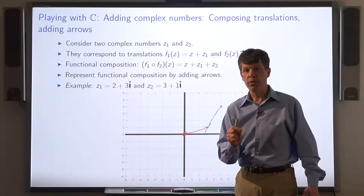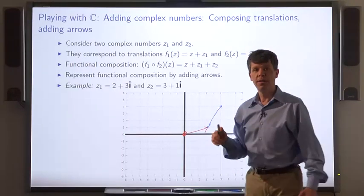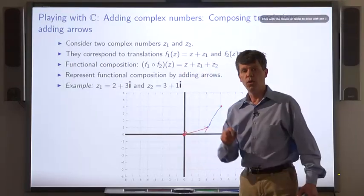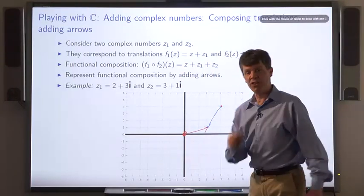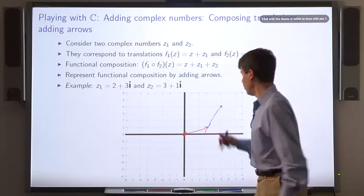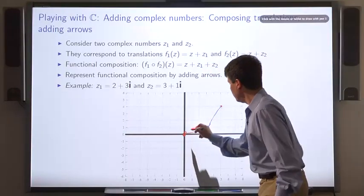Now, what about the functional composition? The functional composition adds z1 plus z2 to its input. We can find that arrow by choosing its tail to be the tail of the first arrow and its head to be the head of the second arrow. So z1 plus z2 is represented by this arrow.